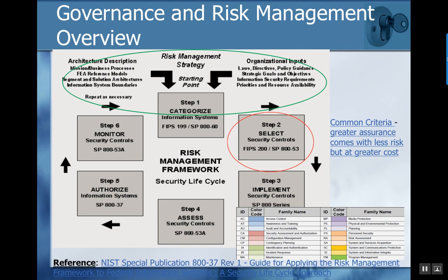Governance and risk management: this is a high-level NIST model of how you should apply risk management — a lifecycle including inventory of systems, selecting controls, implementation of controls, assessment, authorization, and monitoring. This is a cycle starting with categorization of your information systems and methodically working through it. The focus of risk management and governance is thoroughness, repeatability, and iterations — doing it again and again. You go through it, evaluate, implement something, measure it, evaluate the results, and adjust. Security is not a one-time thing; it is an ongoing, continuous process that takes a fair amount of effort and commitment from an organization.